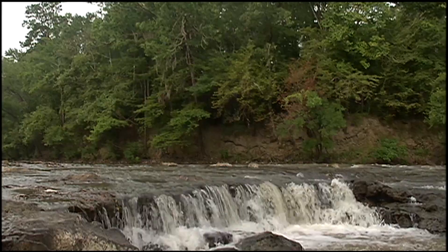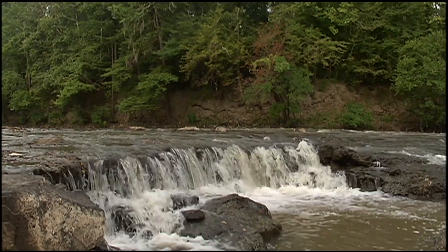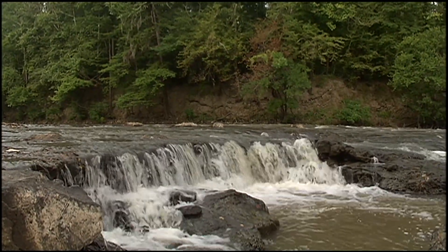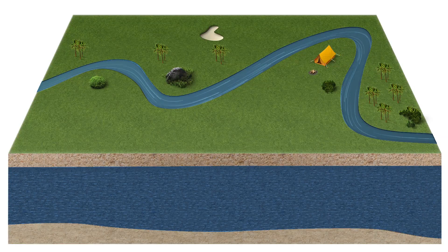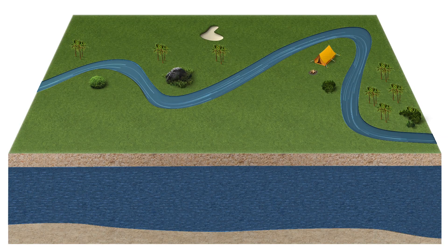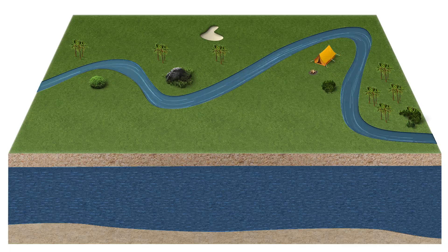On the other hand, gravel transmits water quickly because of large connected pore spaces — the permeability of gravel is high. Compared to water movement through rivers or lakes, the rate of movement through an aquifer is slow.